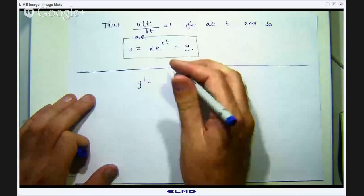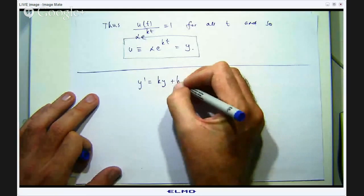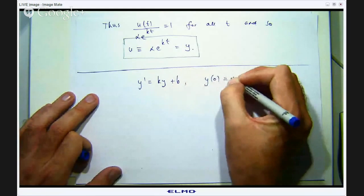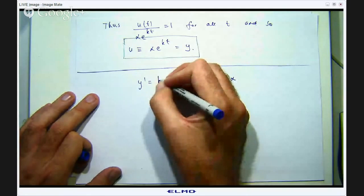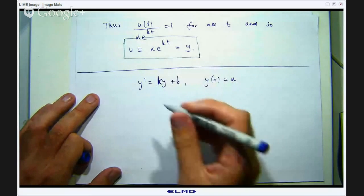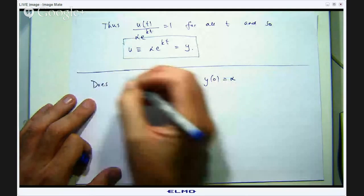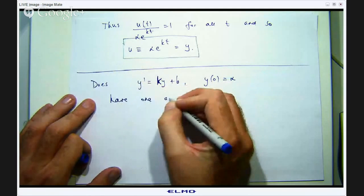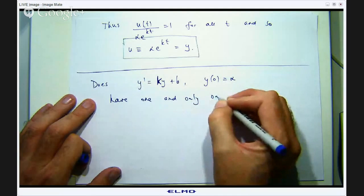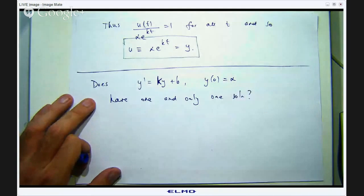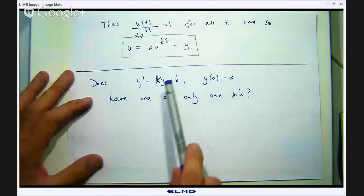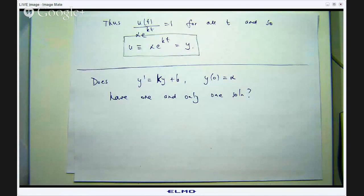What about a slightly more general problem? Say y' = ky + b where k and b are constants. Does that have one and only one solution? Well, what do you think? Do you think you can put in the missing steps and build uniqueness for the more general problem?